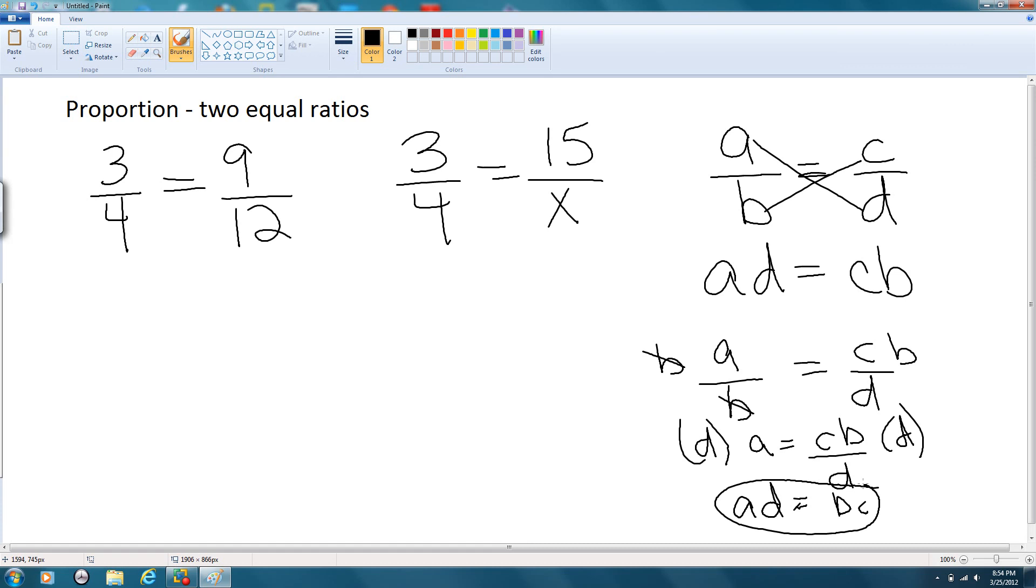Back to this here, right here, we can use this to solve for unknown. Here, X. We can go 3 times X is equal to 4 times 15, or 3X is equal to 60. Divide each side by 3 and we get X is equal to 20.